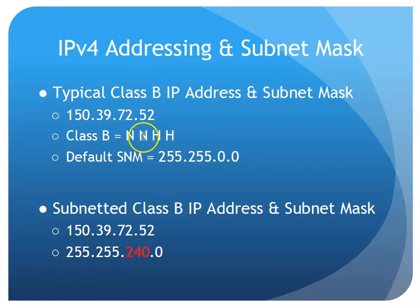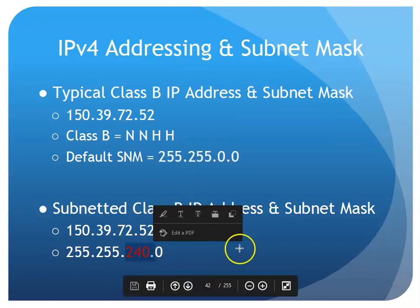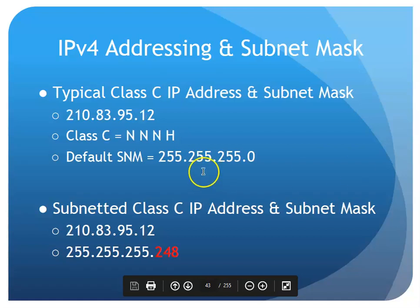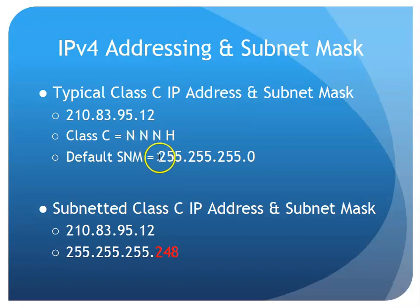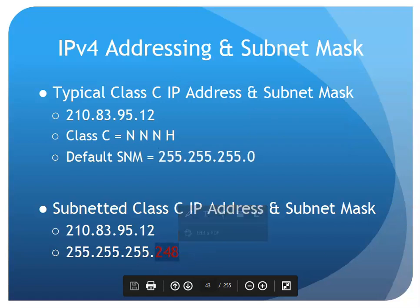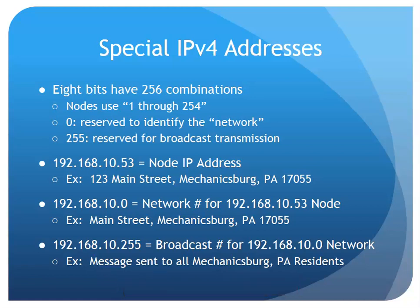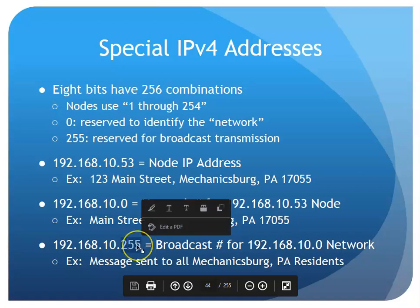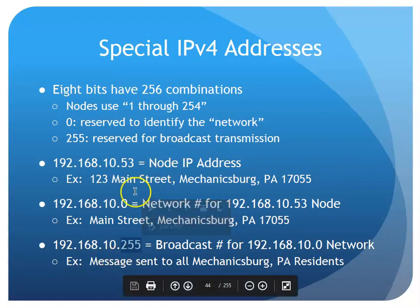A typical Class B has the first two octets as network, so the default is 255.255.0.0 — if I see something in the third octet, I know subnetting has occurred. Class C is network, network, network, host, so I'm expecting 255.255.255.0 — if I see anything in the last octet, I know subnetting has occurred. Zero in the host portion indicates the network number — kind of like just indicating the street. All ones, or 255, in the host portion is a broadcast to everybody on that network.